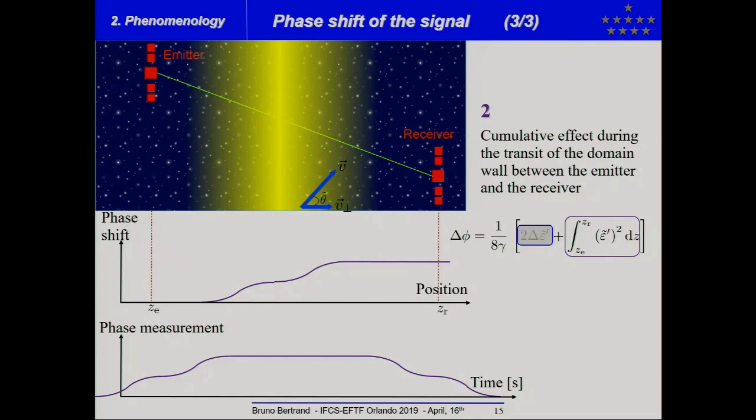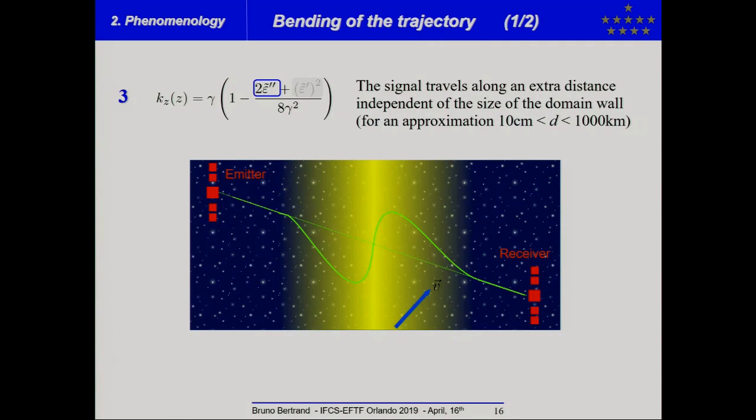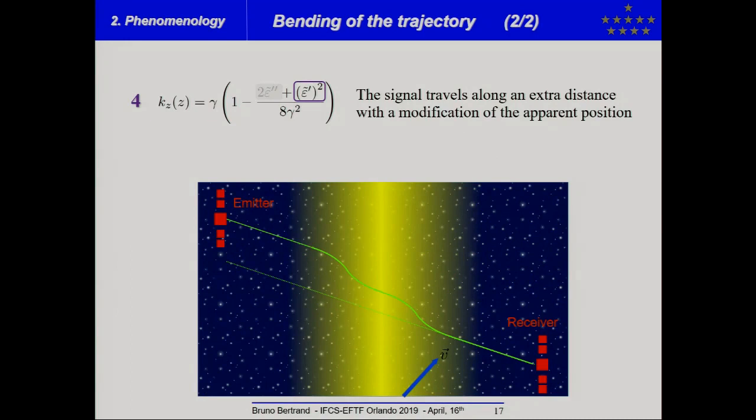The third effect is related to the bending of the trajectory. And so, in that case, you will see a curvature of the trajectory. That means that the signal will travel along an extra distance and this effect is independent of the size of the domain wall and that's interesting because you can search for domain wall which has the size of the carrier wave length.